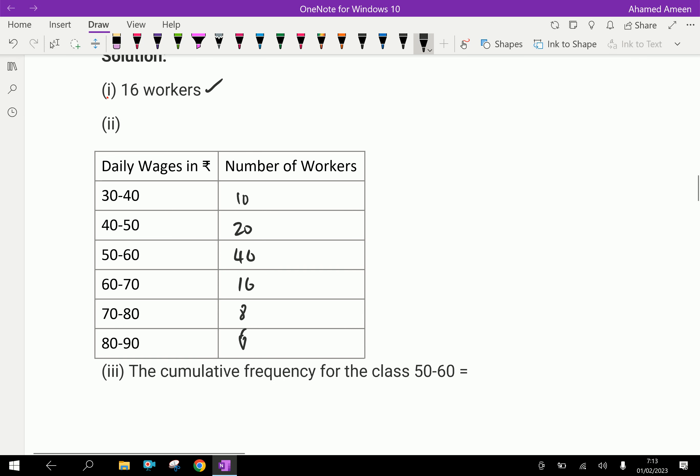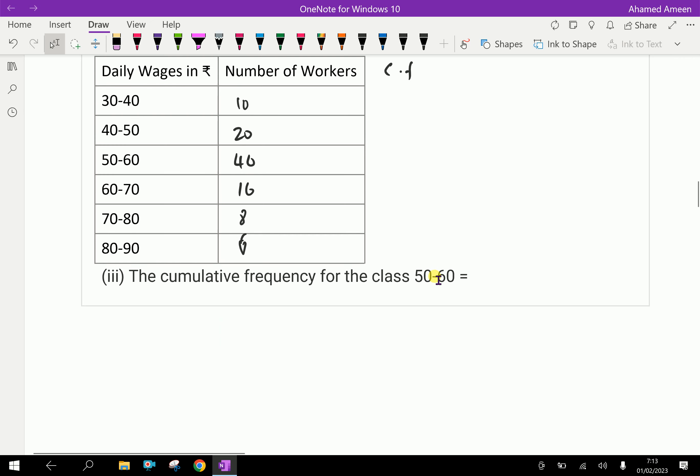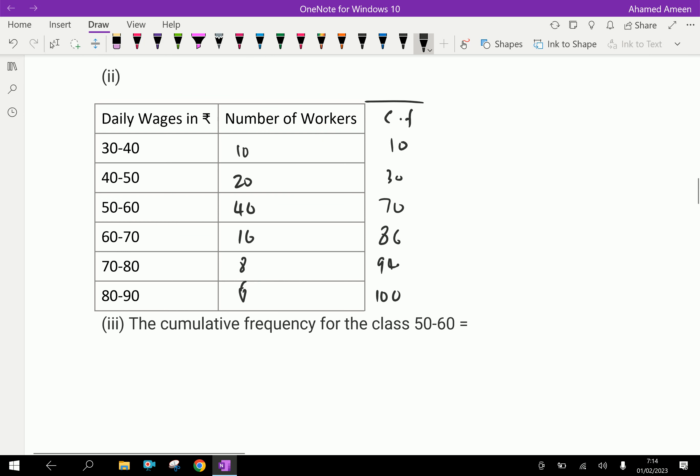Also, you will find cumulative frequency for this distribution. You can write cumulative frequency. Cumulative frequency is nothing but write the first as 10, add up the previous things. That is 30. 30 plus 40 is 70. 70 plus 16 is 86. 86 plus 8 is 94. 94 plus 6 is 100. So, we are keeping extra columns here.